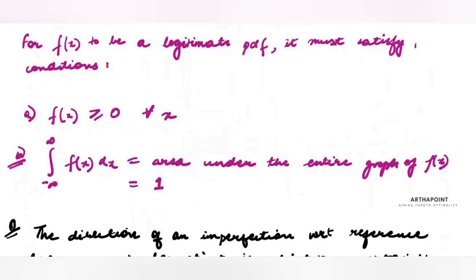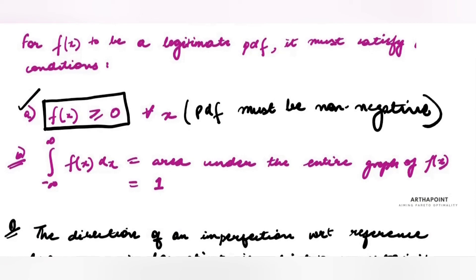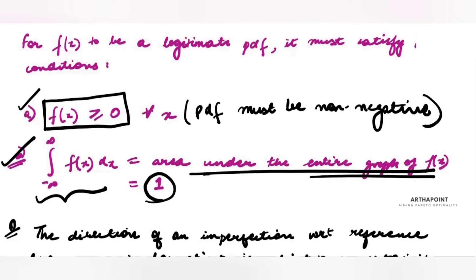Any probability density function for a continuous variable X must satisfy two very important properties. First, f(x) must be greater than or equal to zero — the probability density function must be non-negative. Second, if you integrate the probability density function over the entire space for which it is defined, the area under the entire graph must equal one. If a question asks whether something is a valid PDF, it must satisfy both these properties.